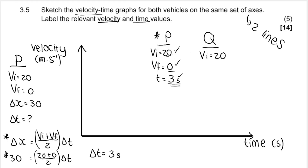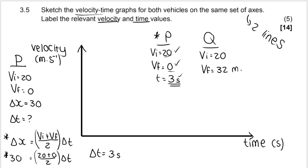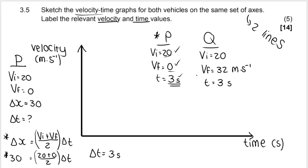For Q: initial velocity is 20, final velocity was calculated as 32 meters per second, and it took 3 seconds to reach that final velocity — as stated in the question. It's just a coincidence that both vehicles took 3 seconds. Then Q continued at a constant velocity after that. It doesn't mean P automatically takes 3 seconds just because Q did — it just happened to work out that way.